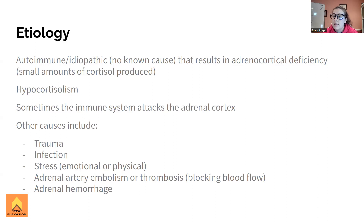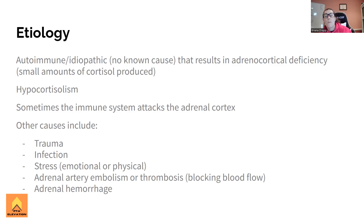It could be physical stress, like overexertion with exercise, work, or even trauma like a car accident. And then adrenal artery embolism or thrombus - anything that's blocking blood flow to the adrenal glands will make them not work, so we'll see less cortisol being produced because the adrenal glands are not getting any nutrients. Any sort of adrenal hemorrhage - if blood flow is not getting to the adrenal glands, we're having problems. All of these things end up causing a decrease in cortisol production, which is essentially the definition of Addison's disease.